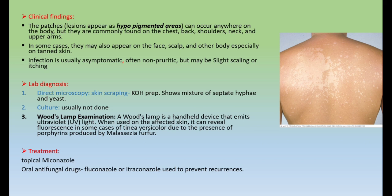For lab diagnosis, direct microscopy is used; culture is usually not done. In direct microscopy we take a skin scraping as a sample, treat with potassium hydroxide (KOH), and can see both septate hyphae and yeast because this organism is dimorphic. The Wood's lamp examination uses a handheld device that emits UV rays; when used on affected skin, it reveals fluorescence in some cases of Tinea Versicolor due to porphyrins produced by the species. Treatment is topical miconazole or oral antifungal drugs.